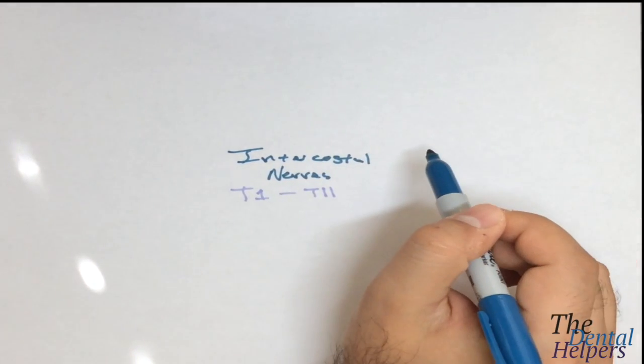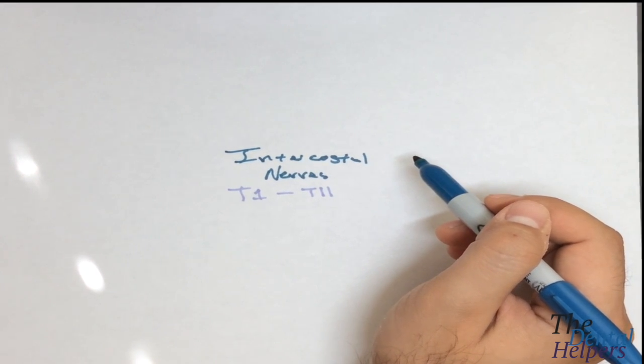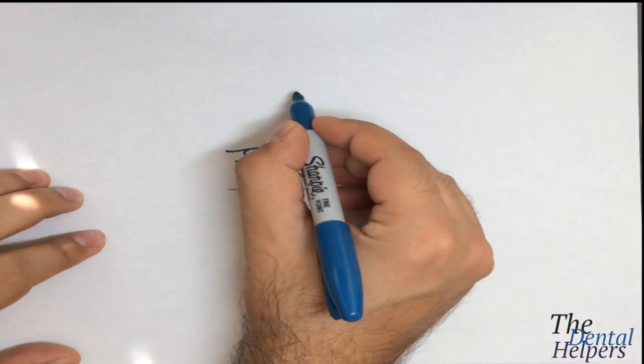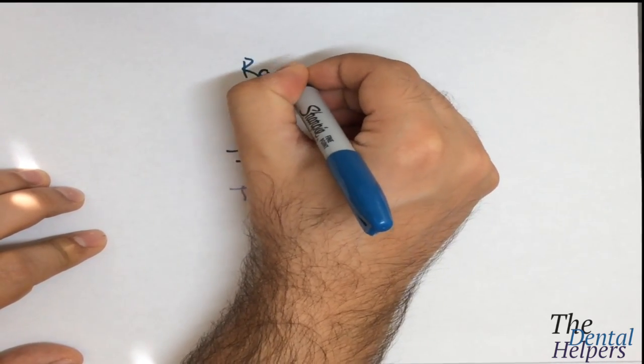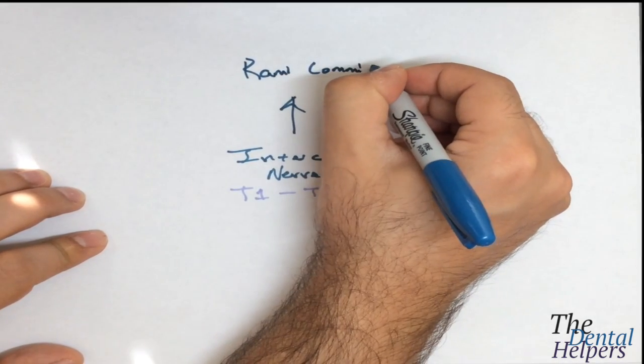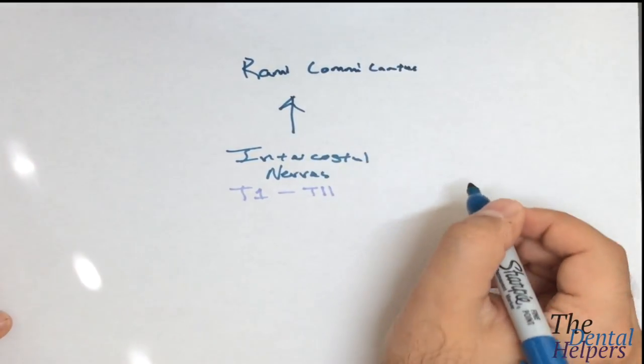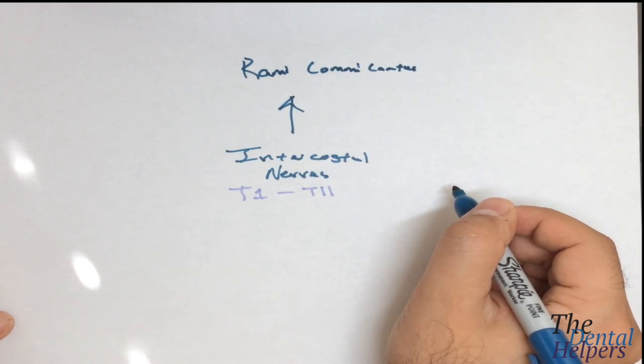There are a bunch of locations that it goes out to. The first is the rami communicans, which connects the intercostal nerves to the ganglia of the sympathetic trunk that lies adjacent to the vertebral column on both sides.